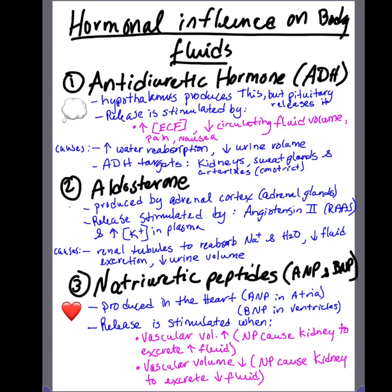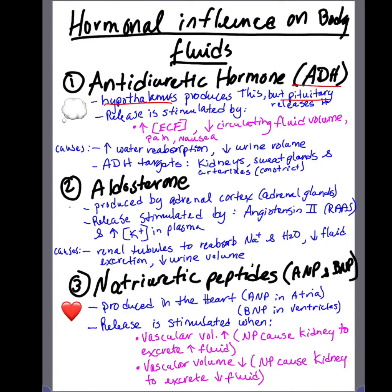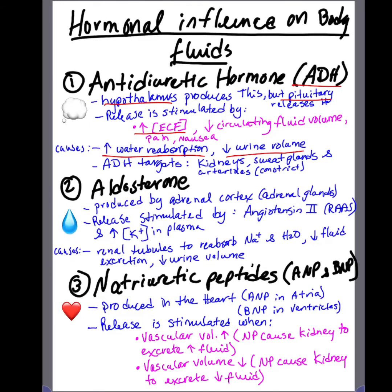Some hormonal influences on body fluids include antidiuretic hormone (ADH), aldosterone, and the natriuretic peptides. ADH is produced by the hypothalamus but released by the posterior pituitary. When released, it increases water reabsorption and reduces urine volume. It is typically released when there is an increase in extracellular fluid concentration, a decrease in circulatory fluid volume, or pain and nausea. ADH targets the kidneys, sweat glands, and arterioles in order to cause constriction.